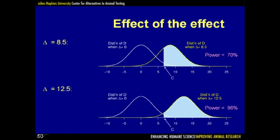We now look at how the size of the treatment effect affects power. Above, the treatment effect is 8.5; below, it is 12.5 — in both cases with 6 mice in each group. All that changes is that the yellow distribution shifts from being centered around 8.5 to being centered around 12.5. The critical value stays the same, but the area under the yellow curve to the right of the critical value increases from 70% to 96%.